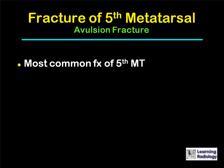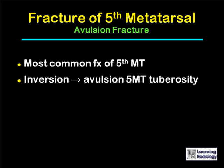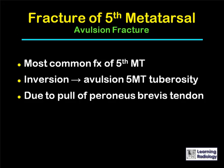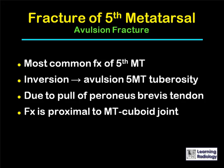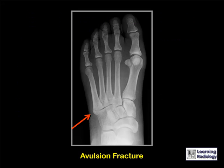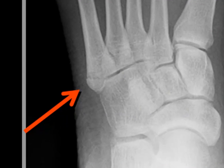Avulsion fractures of the fifth metatarsal are the most common fractures of the fifth metatarsal. They're usually due to inversion injuries, which lead to avulsion of the fifth metatarsal tuberosity. They're due to a pull of the peroneus brevis tendon. The fracture is usually proximal to the metatarsal-cuboid joint, and these types of fractures tend to heal quickly. This is an example of an avulsion fracture at the base of the fifth metatarsal — you can see it's a fracture of the tuberosity, in line with the joint between the metatarsal and the cuboid.